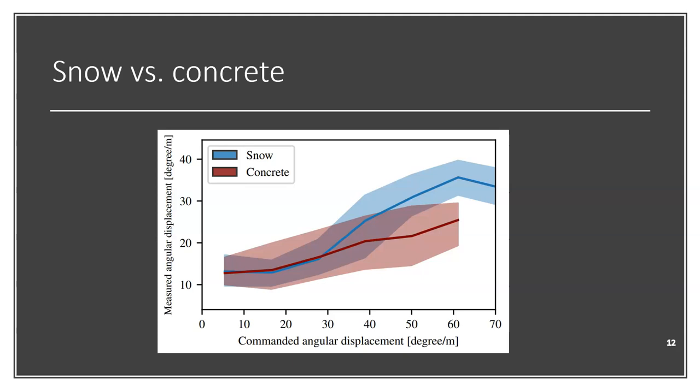What we can see in this figure is that for commanded angular displacement of more than 30 degrees per meter, the actual measured displacement is bigger for snow-covered terrain, which means that turning is more efficient on snow-covered terrain. However, the behavior of the vehicle on snow-covered terrain adds some non-linearity that we can see here.